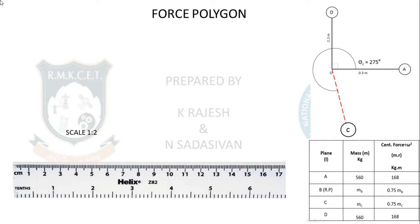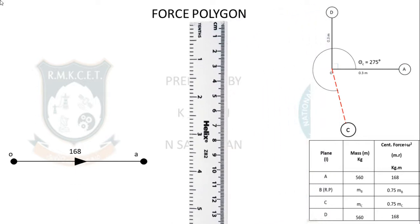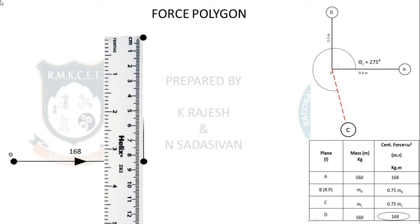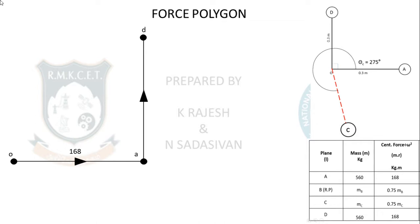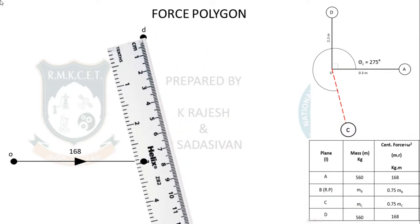For the force polygon, use scale 1:2. A row force value is 168; divide by 2 = 84 mm, rightward arrow (positive). Next, follow the angular position diagram sequence: after A anticlockwise comes D. D force value is also 168 — so 84 mm vertical upward arrow. Then draw the force vector for balancing mass C: value = 0.75 × 249 = 186.75, divided by 2 = 93.375 mm, in the direction found from the couple polygon with a downward-pointing arrow.